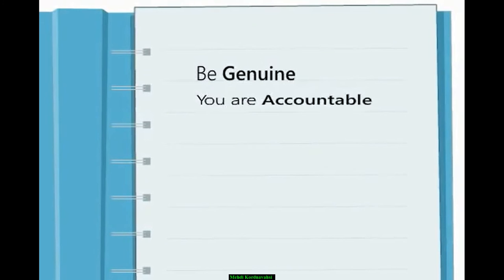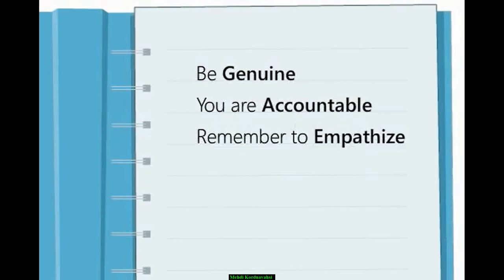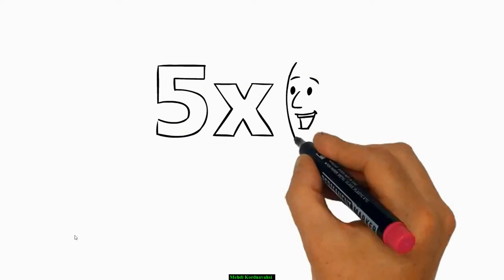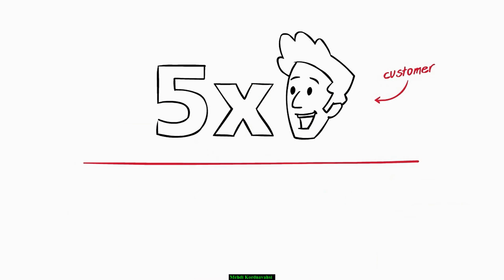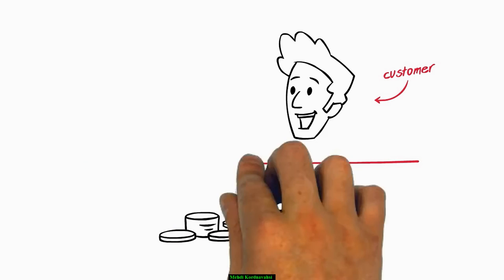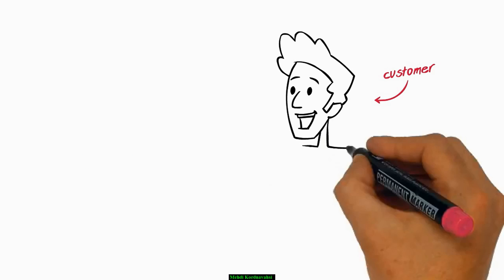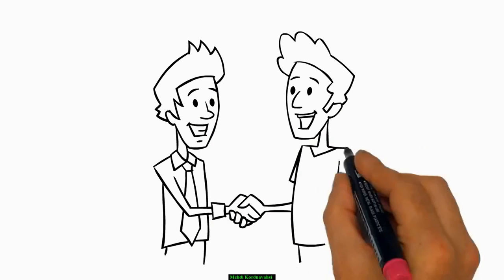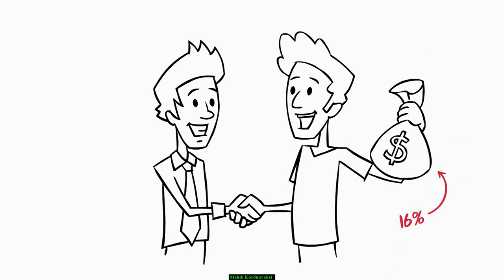To recap the 5 steps: be genuine, be accountable, remember to empathize, innovate for solutions, and be trustworthy. In fact, it costs five times more to acquire new customers than it does to keep current ones. So focus on your current customers and their satisfaction, because engaged customers spend a whopping 16% more.